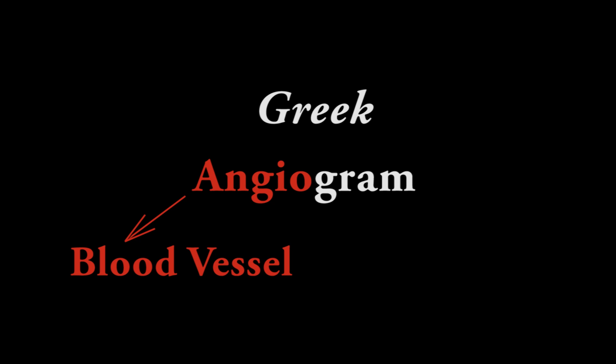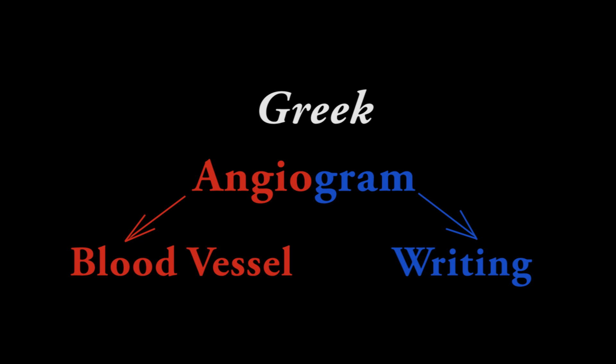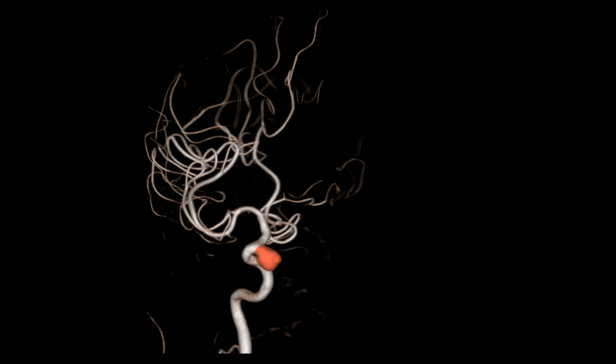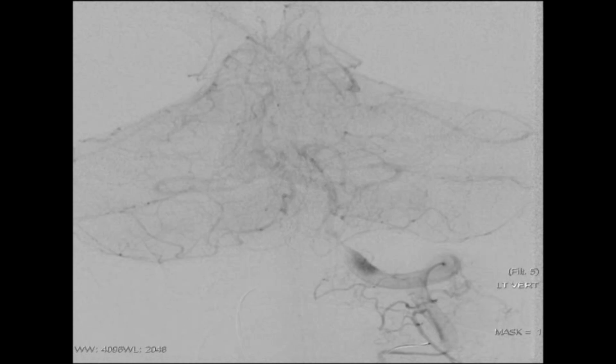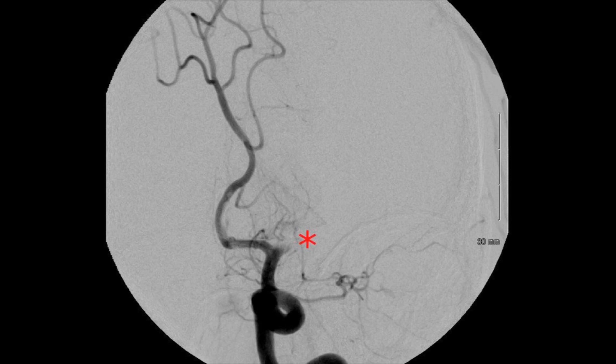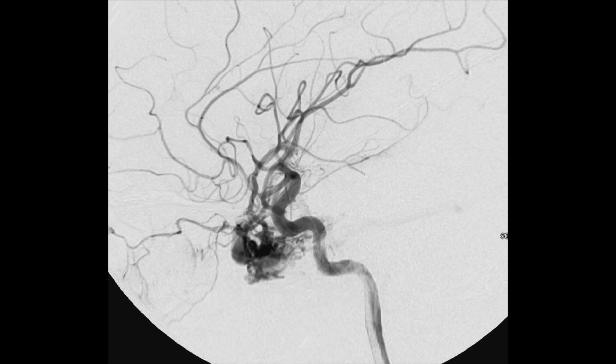Angio meaning blood vessel and gram meaning writing or recording. A doctor may order an angiogram of the brain to look for an aneurysm, measure an arterial blockage, discover the cause of a stroke, or in today's patient's case, reassess a treated vascular malformation.